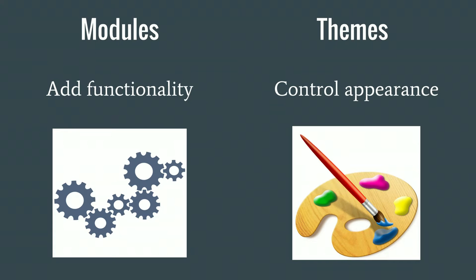Then we have modules and themes. Modules add functionality, and themes control appearance. For example, if you have a blog and every time you write an article you want a tweet or a Facebook post to be sent — that is functionality, provided by modules. If you want to change the color scheme of your website, or the font type, that is appearance — controlled by the theme.